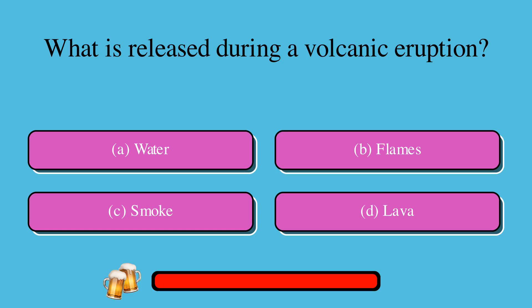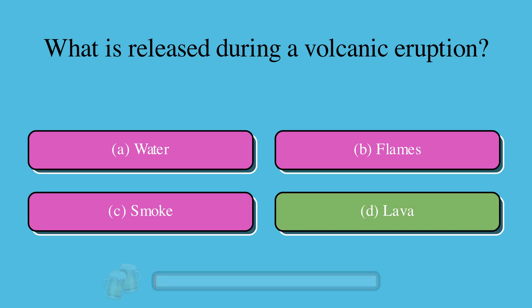What is released during a volcanic eruption? A. Water, or B. Flames, or C. Smoke, or D. Lava? The correct answer is D. Lava.